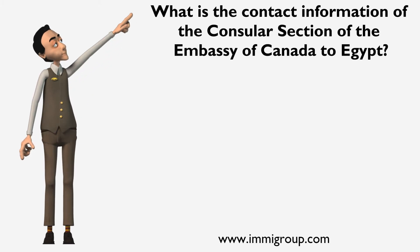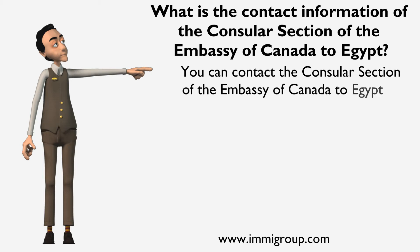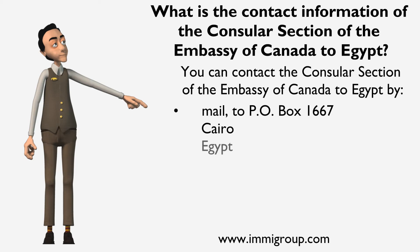What is the contact information of the Consular Section of the Embassy of Canada to Egypt? You can contact the Consular Section of the Embassy of Canada to Egypt by mail to P.O. Box 1667, Cairo, Egypt, telephone at 202-2791-8700.